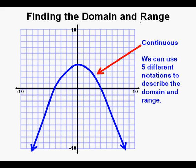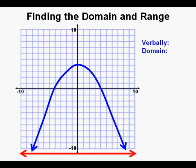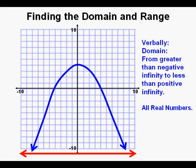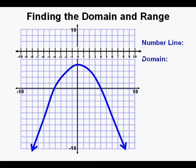For this relation, we can use five different types of notation to describe the domain and range. Verbally, we can see the end behavior going from negative infinity to positive infinity shown by the red arrows. So we can say that the domain goes from greater than negative infinity to less than infinity, or we can call it all real numbers. Next, we'll look at a number line shown here overlaying the graph — the domain is shown in red with arrows pointing to negative infinity on the left and positive infinity on the right.